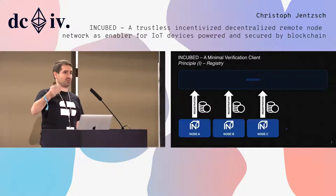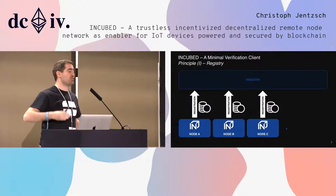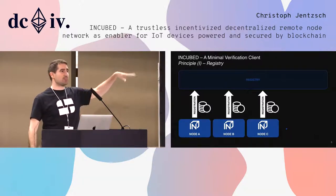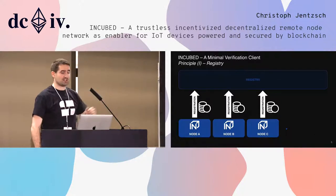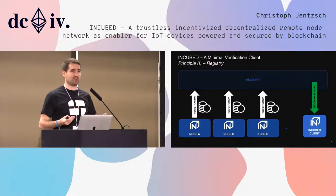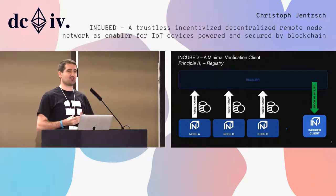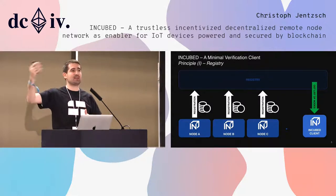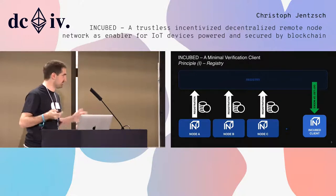Let me explain how it works. First, there's a registry contract. If you want to run a node — similar to a server — you register there and pay a deposit. This deposit is something you would lose in case you cheat or lie. As a client, when you bootstrap the Incubed client for the first time, you get the current list from the registry to know which nodes or servers are available. After that, you can keep it updated yourself.